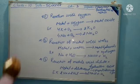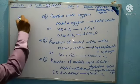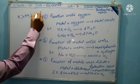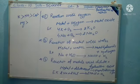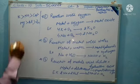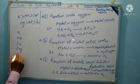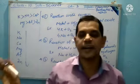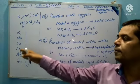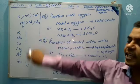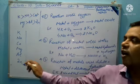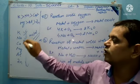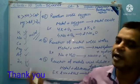The more reactive metal is potassium, then sodium, then calcium, then magnesium, then aluminum, and zinc. So in decreasing order of reactivity: potassium, sodium, calcium, magnesium, aluminum, and zinc — this is the reactive series of metals.